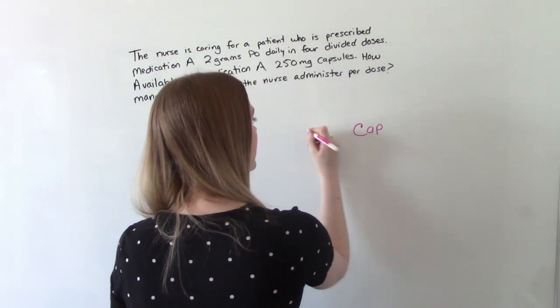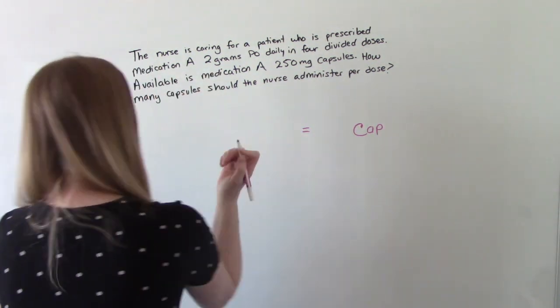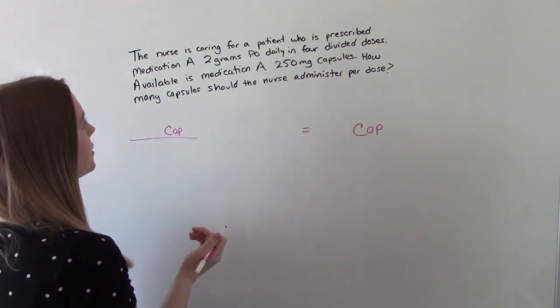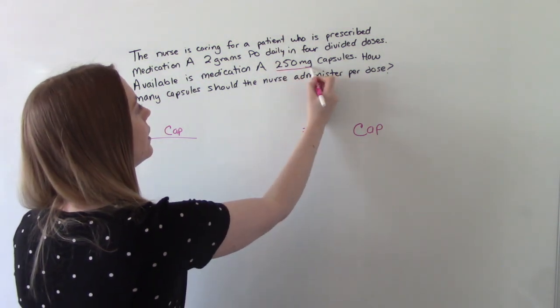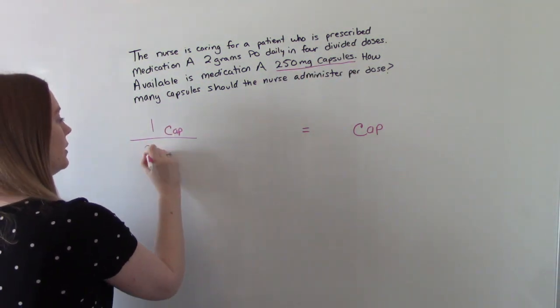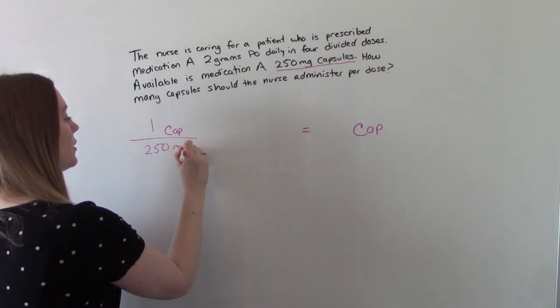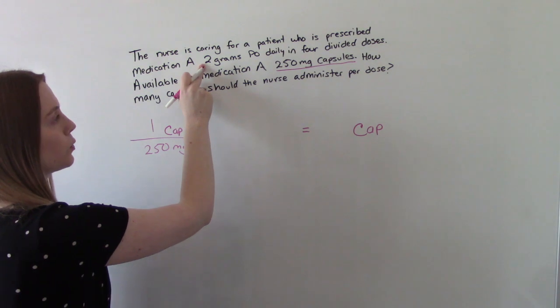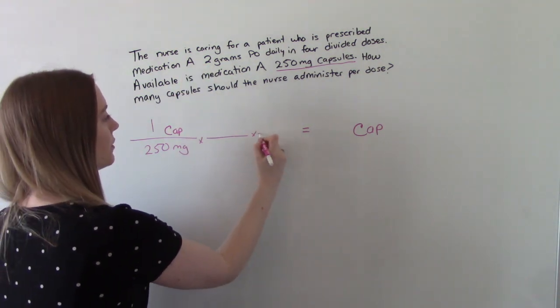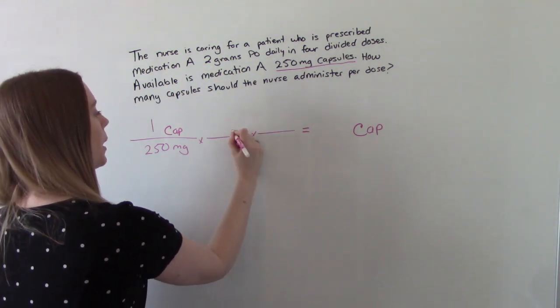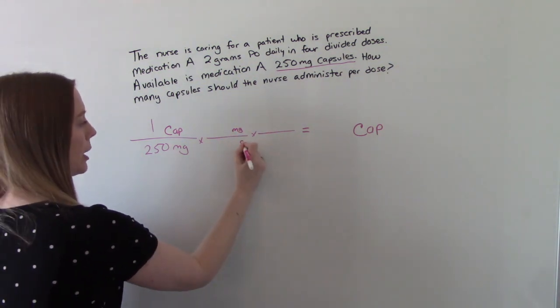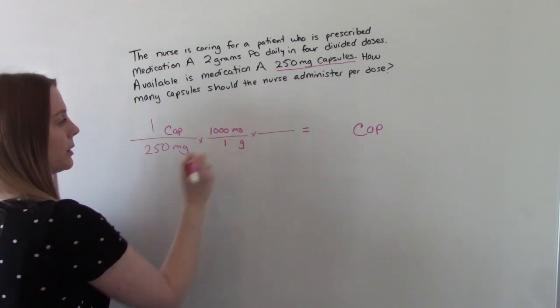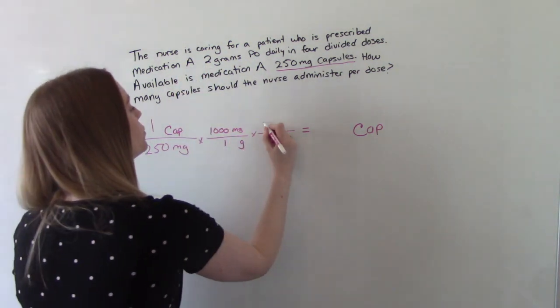So we want to have capsules here in our answer. And if it's in our answer, of course, it's got to go in our numerator. So where do we see capsules in our problem? Right here. So one capsule is 250 milligrams. Now, we need to convert because we have available to us grams. So we need a conversion factor. So milligrams on top, that way it'll cancel. Grams on the bottom. So one gram is 1,000 milligrams. And then we want to give two grams.